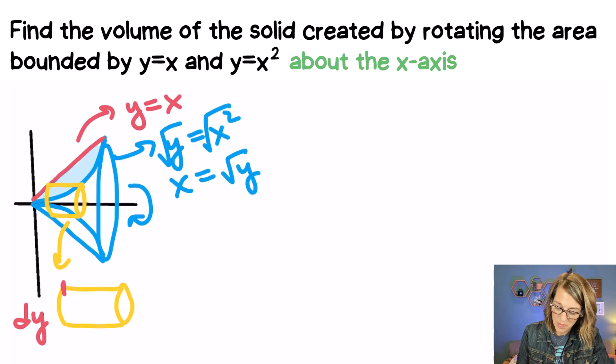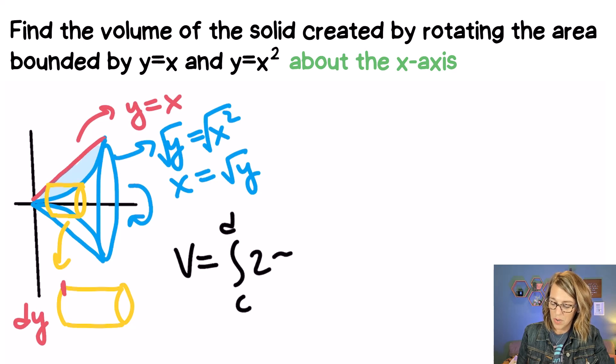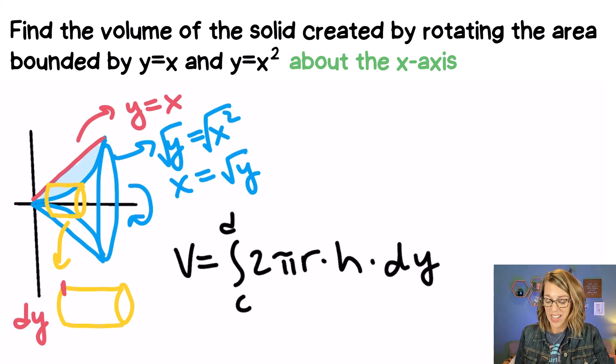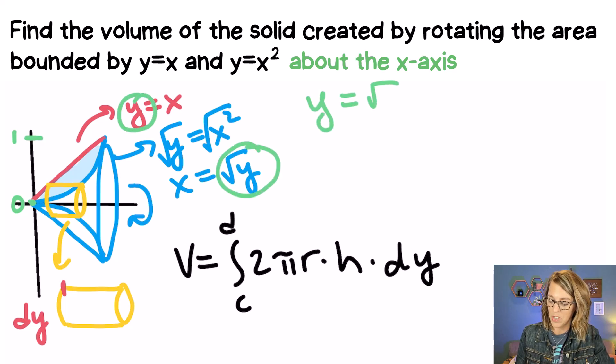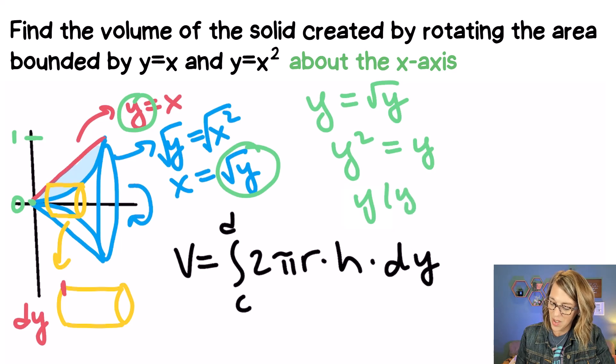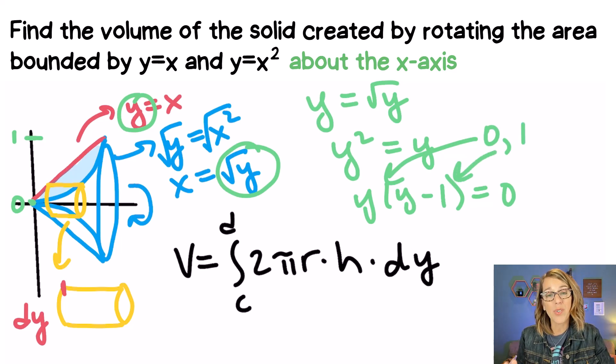Now we can start to put this together. I know that I want my volume is equal to the integral from, I want my y values, I'm going to say from c to d, 2πr times h times my thickness which we determined to be a dy. Let's go ahead and start with those limits of integration. So I know that my limits of integration are going to be the lowest y value for that original area and the highest y value for that original area which happens to be 1. If you don't see that it's 1, you can set your two functions equal. y is equal to the square root of y. I can square both sides. y^2 is equal to y. And I end up with my two solutions as being either 0 or 1.